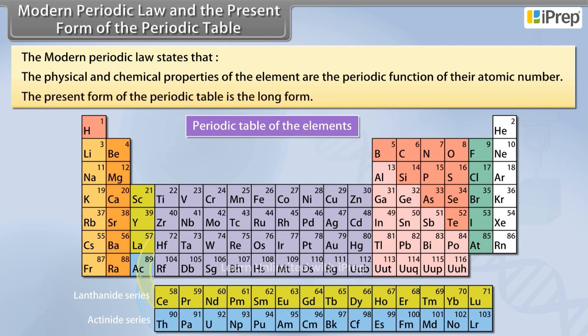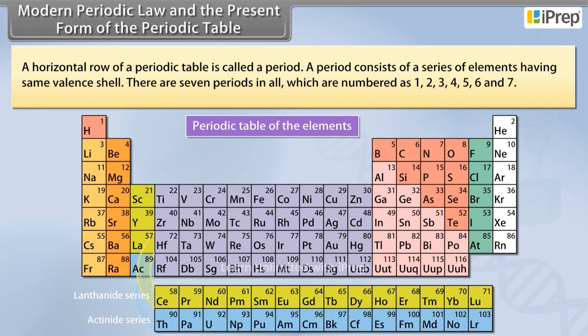The present form of the periodic table is the long form. A horizontal row of a periodic table is called a period. A period consists of a series of elements having same valency shell.